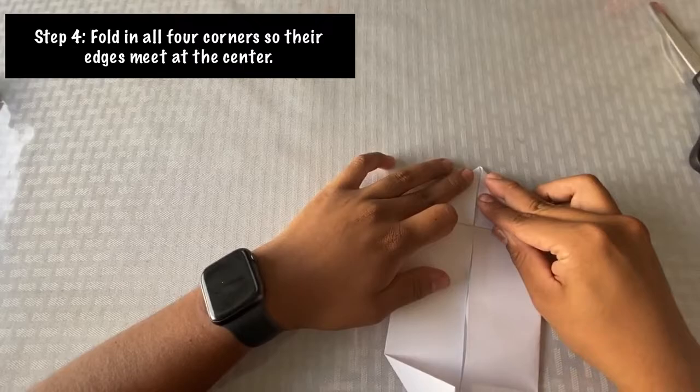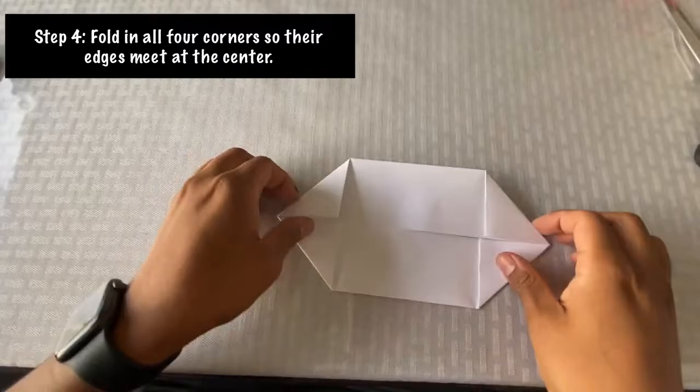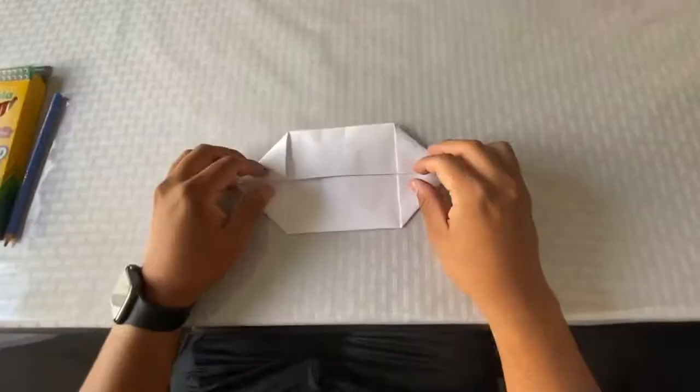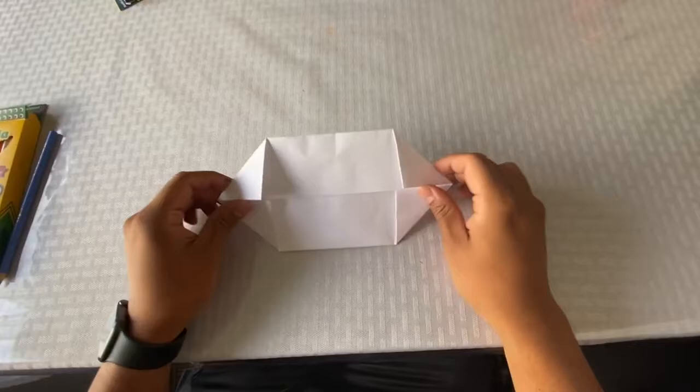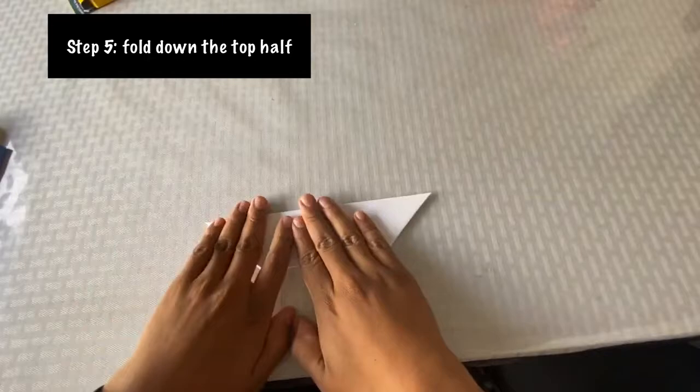Make sure that you crease that good, make sure it stays flat. Double check all four corners, make sure they look good. Now moving on to Step 5, what we're going to do is fold down the top half. Make sure you get a good crease on that.